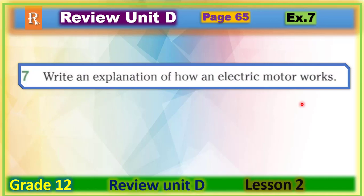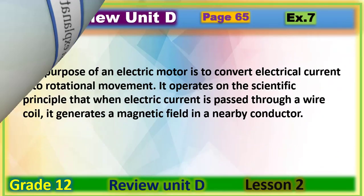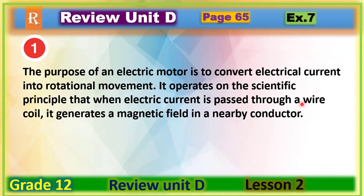Welcome back students, now let's check your answers. The first step: the purpose of an electric motor is to convert electrical current into rotational movement. It operates on the scientific principle that when electric current is passed through a wire coil, it generates a magnetic field in a nearby conductor.